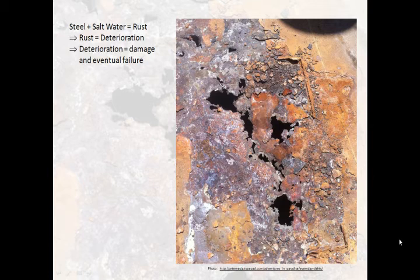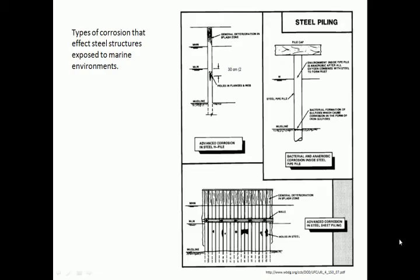One of the environments in which steel is most susceptible to corrosion is in the marine or salt water environment. Several different types of corrosion occur in steel. The most common is oxidation of the steel in the form of iron oxides or rust. Other forms of corrosion are erosion from wind and also bacterial and anaerobic corrosion that can occur in the inside of steel pipe piles.